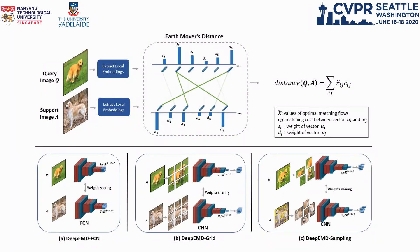We explore three methods to extract local image representations, including fully convolutional networks, image grids, and random patch sampling. As you can see from the structure, an important problem parameter is the weight of each node, which controls the total matching flows from it. Intuitively, the node with a large weight plays a more important role in the comparison of two sets, while a node with a small weight can hardly influence the overall distance, no matter which nodes it connects with.